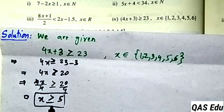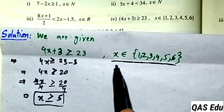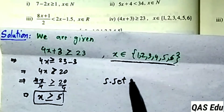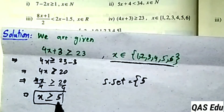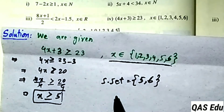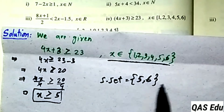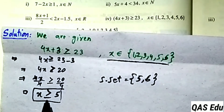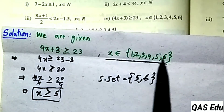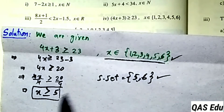So x is greater than or equal to 5. Applying the restriction that x belongs to {1, 2, 3, 4, 5, 6}, we need x values from this set that are 5 or greater. Those are 5 and 6. So the solution set for this inequality, given the restriction, is {5, 6}.